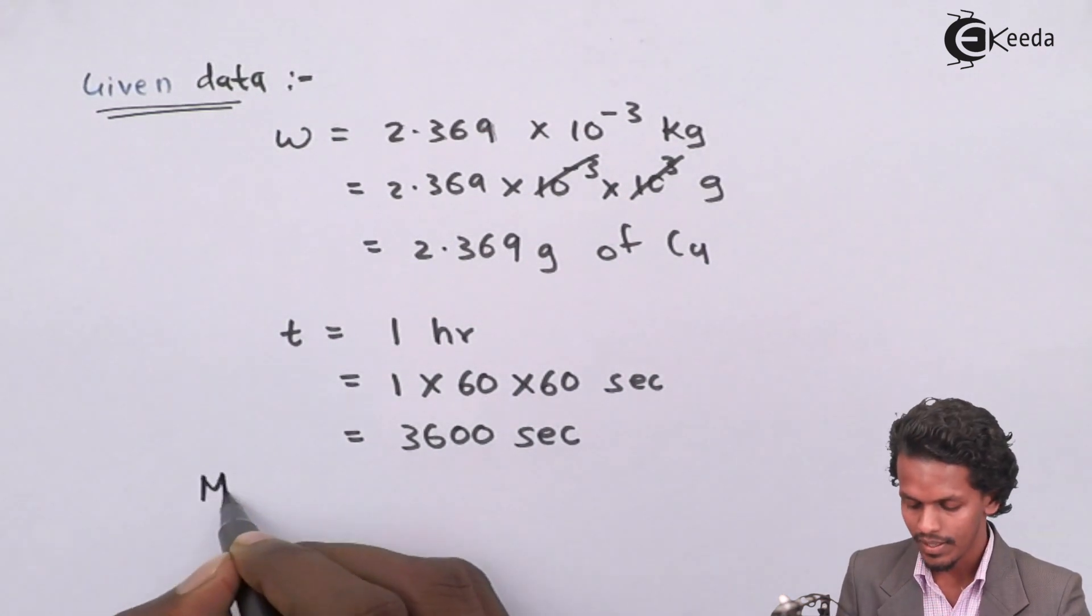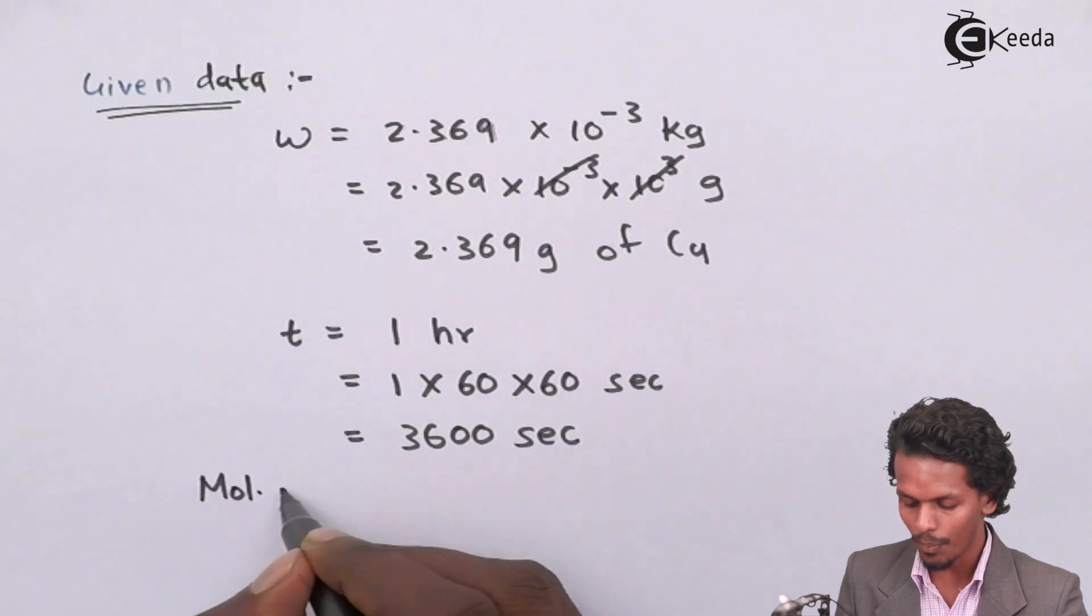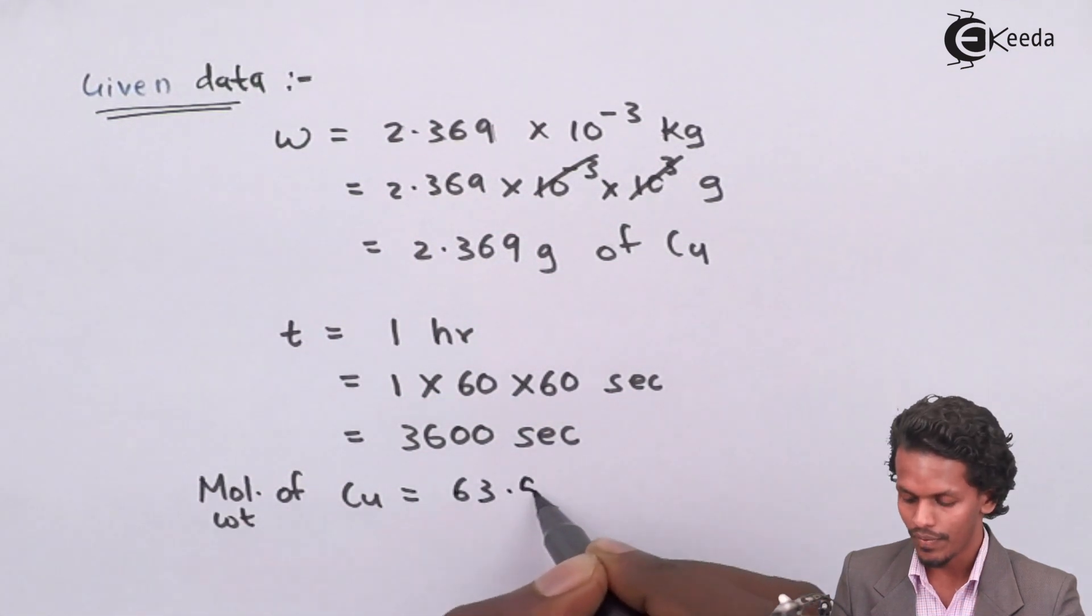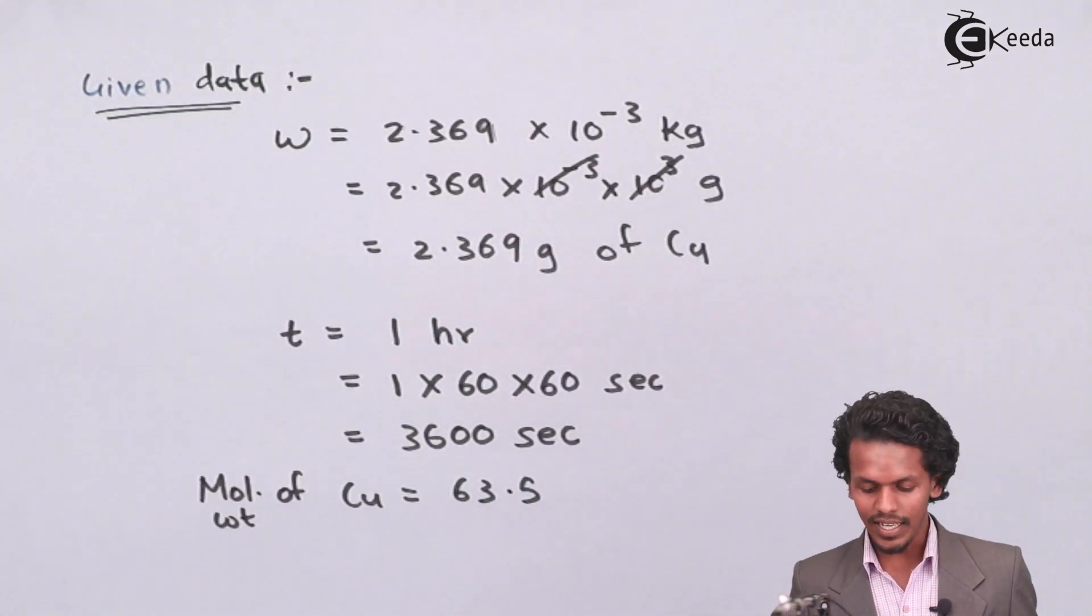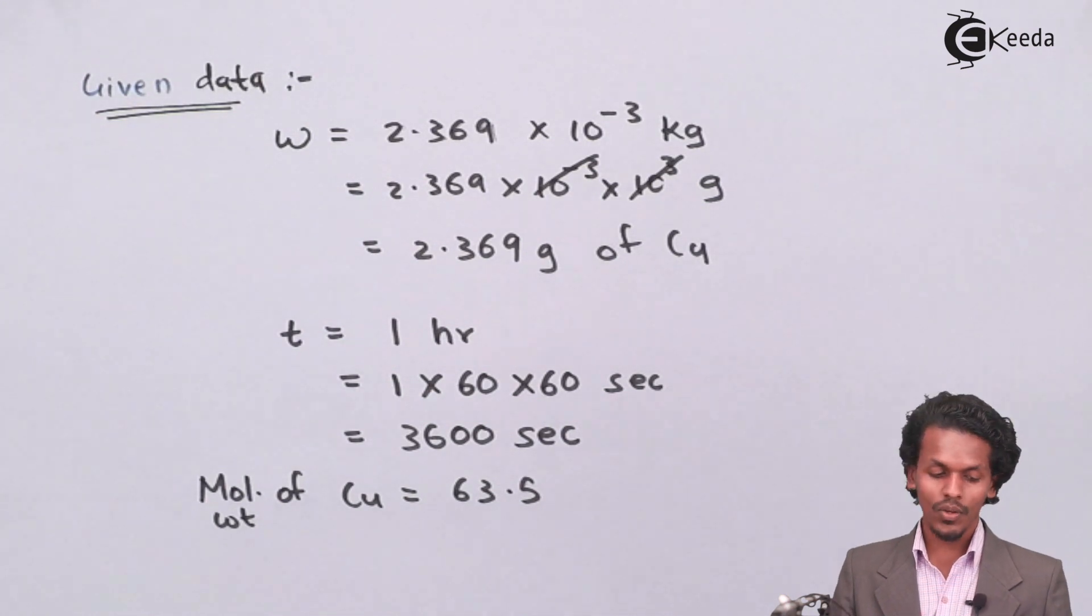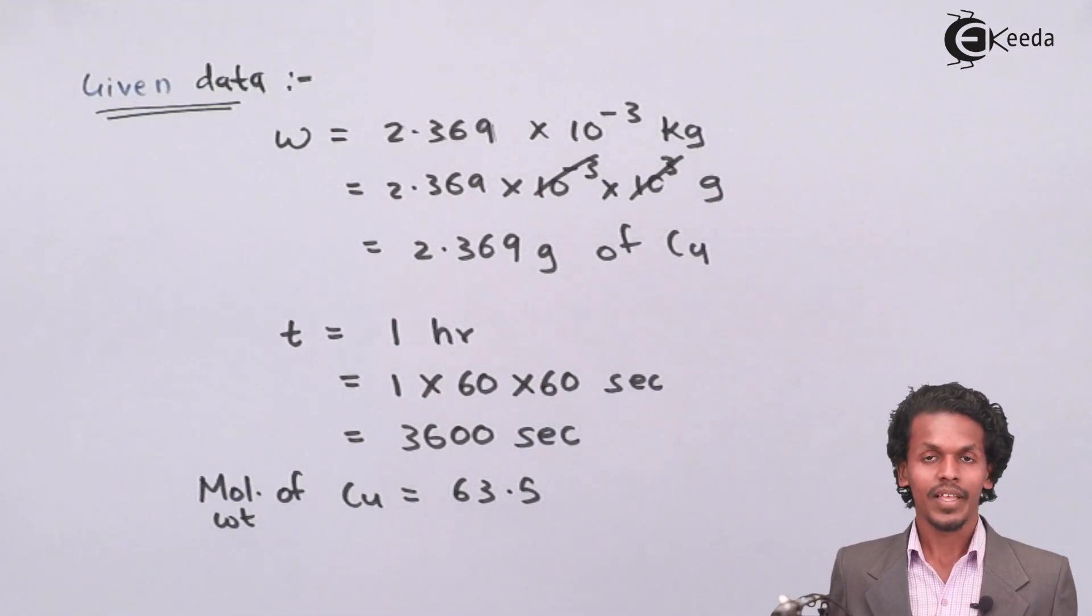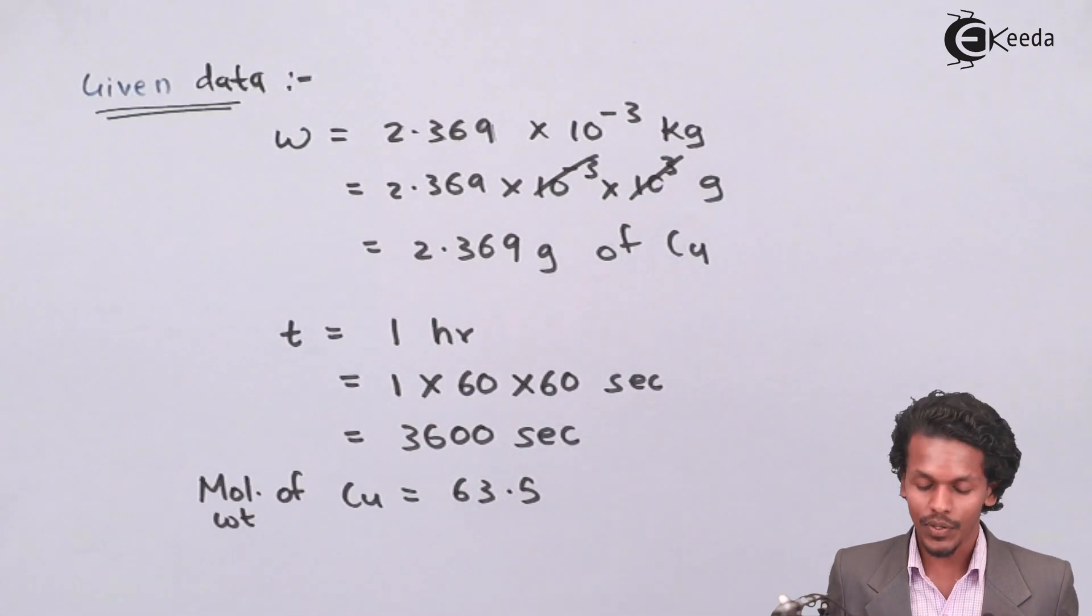And lastly, they have given us the molecular weight. Therefore, the molecular weight of copper has been mentioned here as 63.5. So with the help of this data, we could estimate what would be the current, that is, what would be the value of I when this kind of data is given to us.